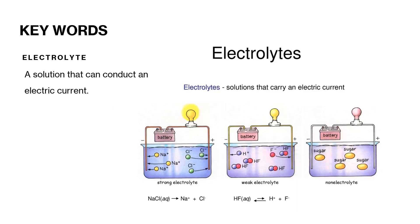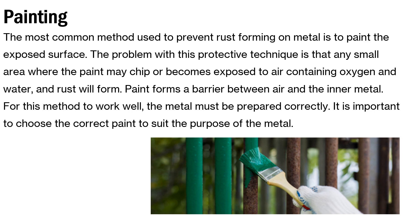Electrolyte: a solution that can conduct an electric current. Painting: the most common method used to prevent rust forming on metal is to paint the exposed surface. The problem with this protective technique is that any small area where the paint may chip or becomes exposed to air containing oxygen and water, rust will form. Paint forms a barrier between air and the inner metal. For this method to work well, the metal must be prepared correctly.